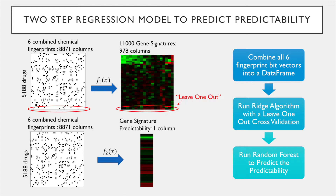This predicted vector of expression was compared to the ground truth by computing a correlation coefficient r squared. We then took the vector of r squared for all small molecules, which was the predictability for each small molecule, and used that as the target vector to learn, again with the fingerprints as attributes. This regression step was performed with the random forest algorithm, which predicts the predictability of each small molecule.